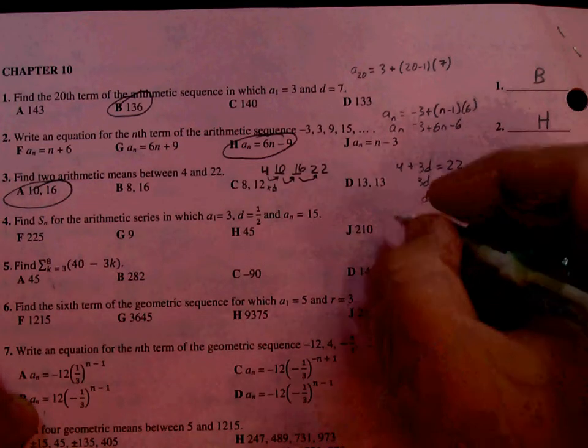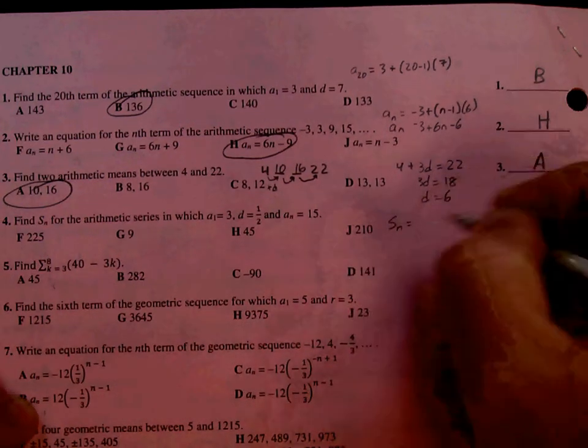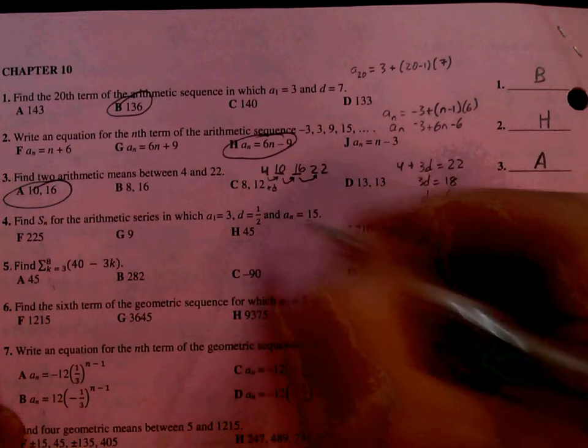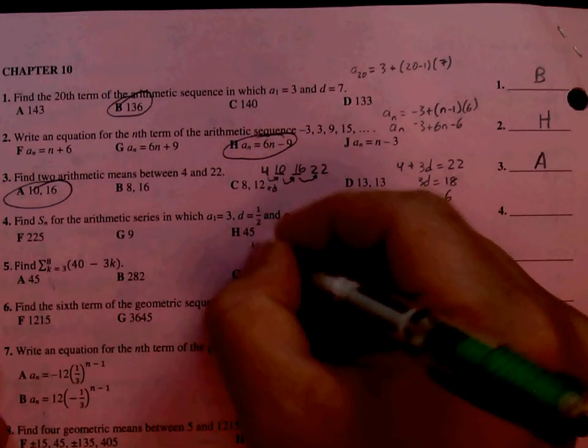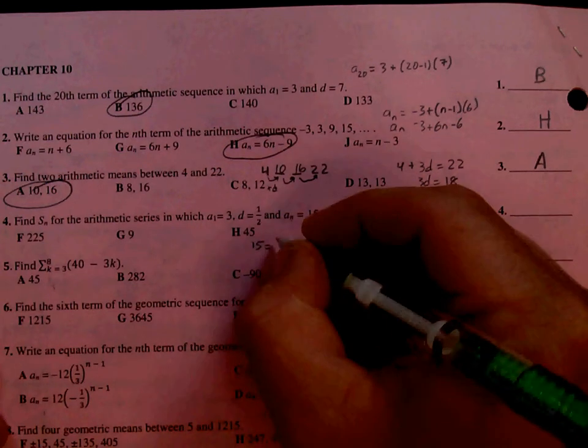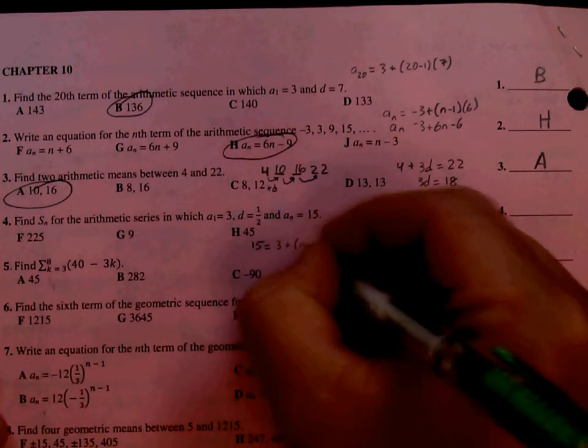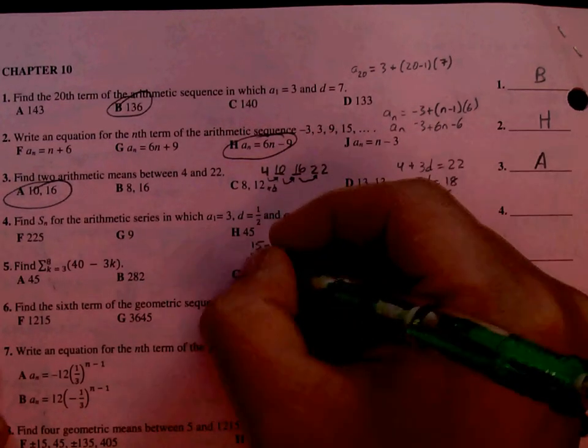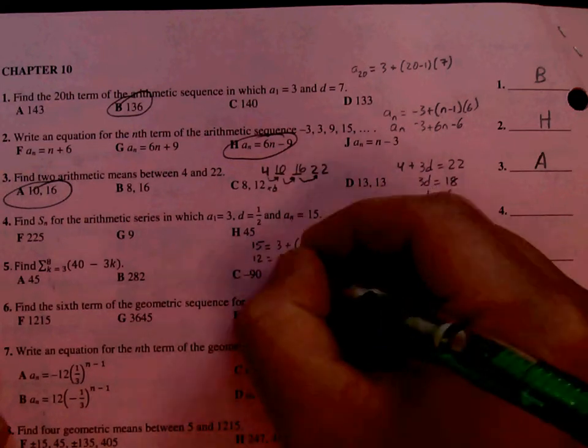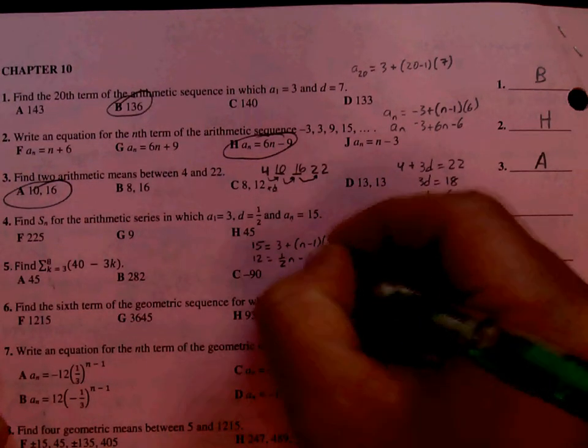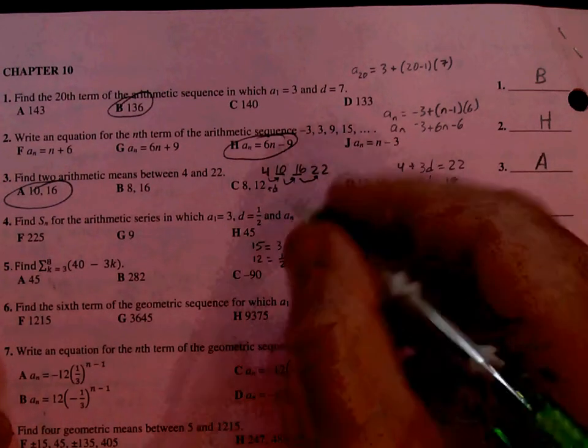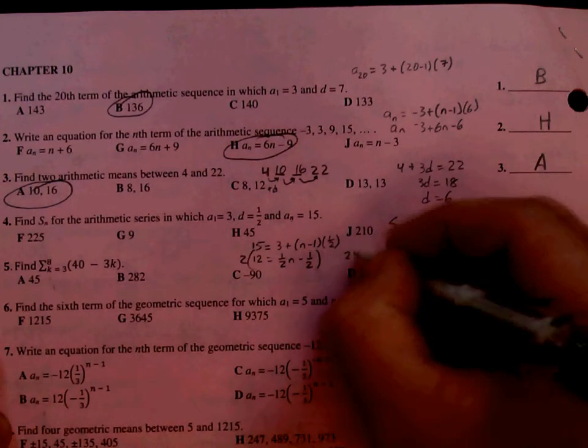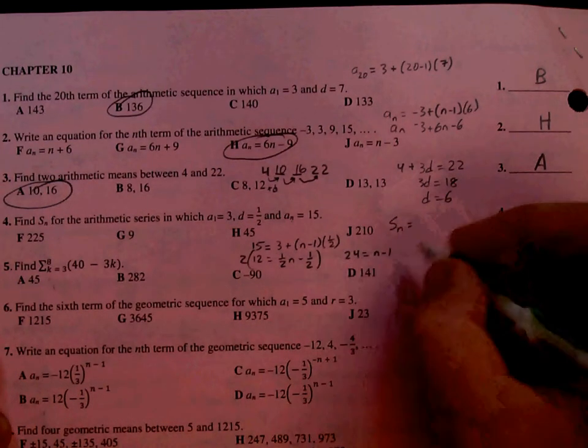Number 4, find the sum of the series. We don't know how many terms, so we've got to find out how many terms. We have to find out what the end value is for 15. So we've got 15 as the nth term, first term is 3, so N minus 1 times D, which is 1 half. Subtract the 3, distribute the 1 half. I'd probably multiply everything by 2 at this point to get rid of the fractions.